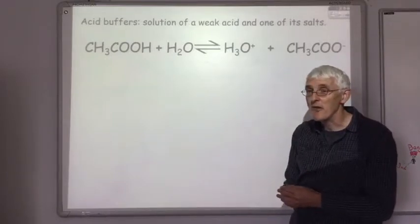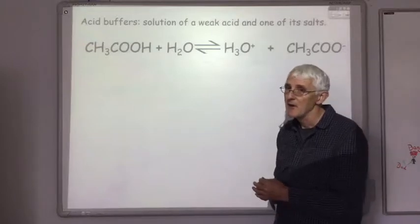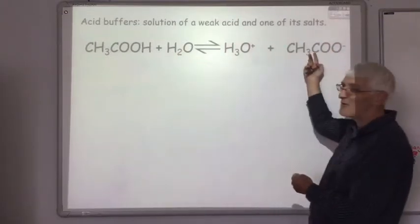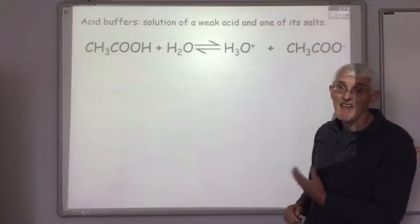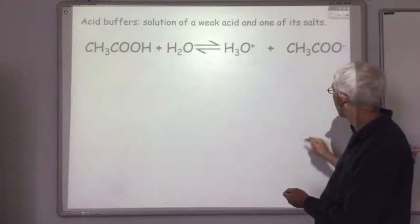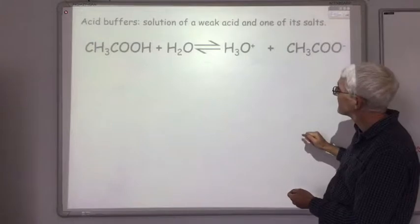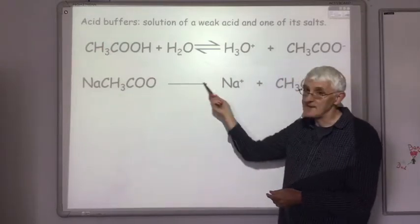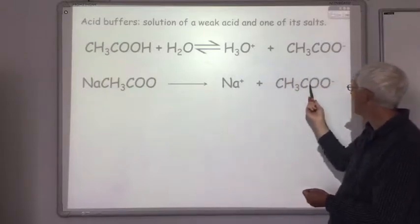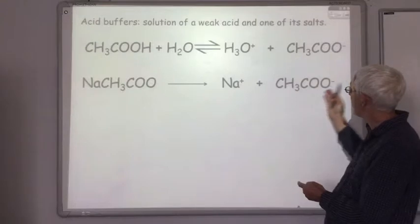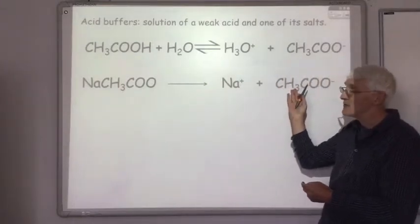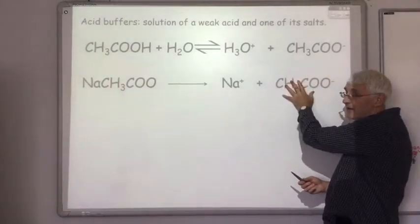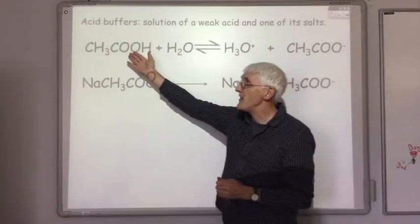However, the system as it stands cannot cope with us adding more H+ ions. You could think that some of the ethanoate ions could react with H+ ions to remove them, but we've got so few of these in the system that it wouldn't cope with much impurities. So that's where the salt comes in. The salt of the acid, sodium ethanoate, fully dissociates because it's soluble in water, giving sodium ions and ethanoate ions. So we've got this large reservoir of ethanoate ions produced by the salt. So now if we add excess acid to the system, the acid can be removed by the ethanoate ions provided by the salt, combining with H+ ions to produce more ethanoic acid molecules.